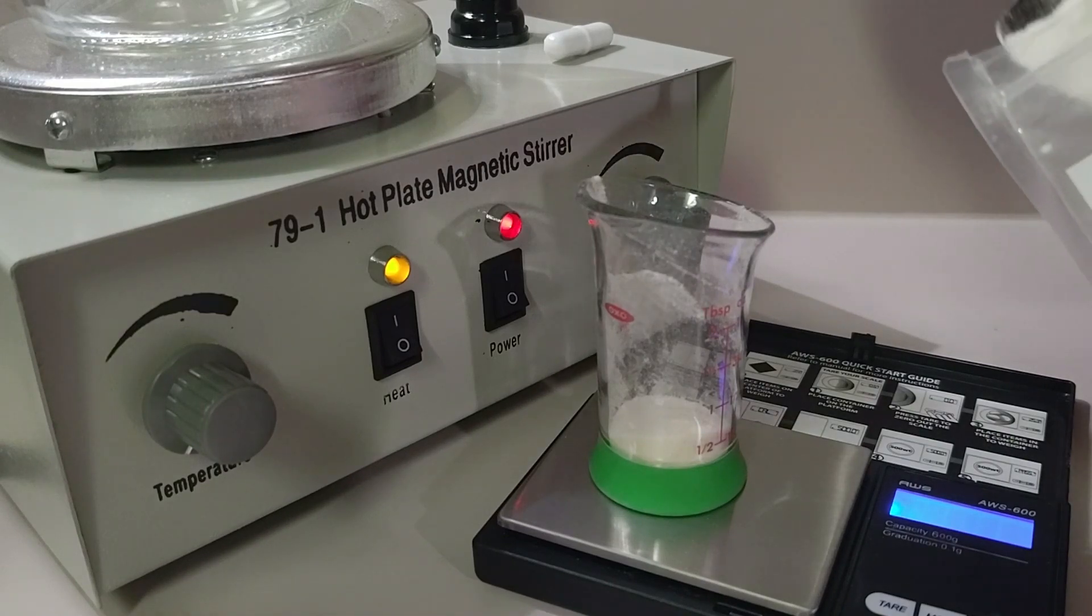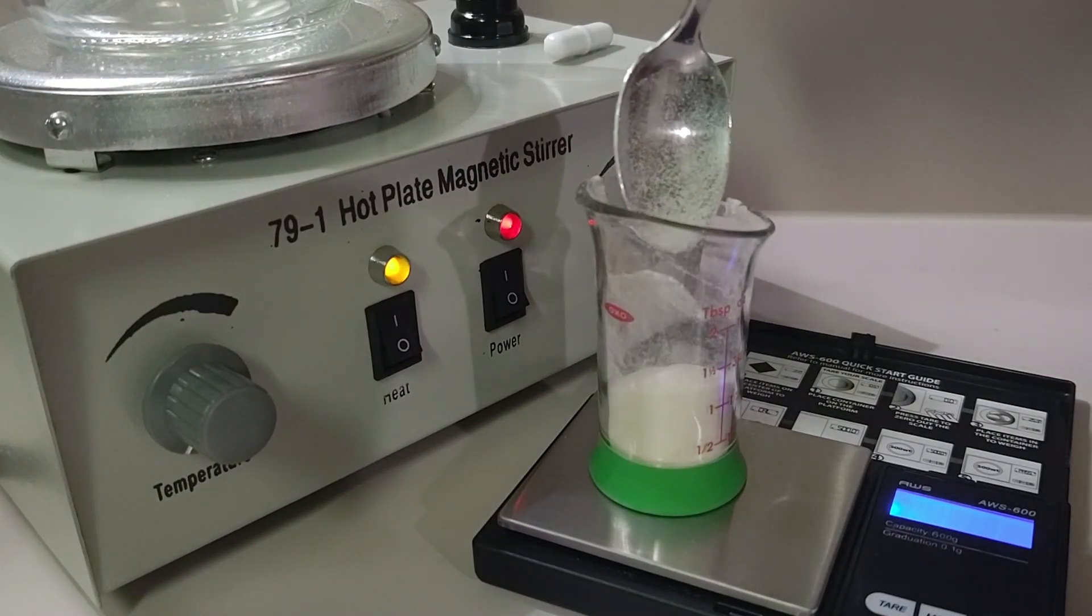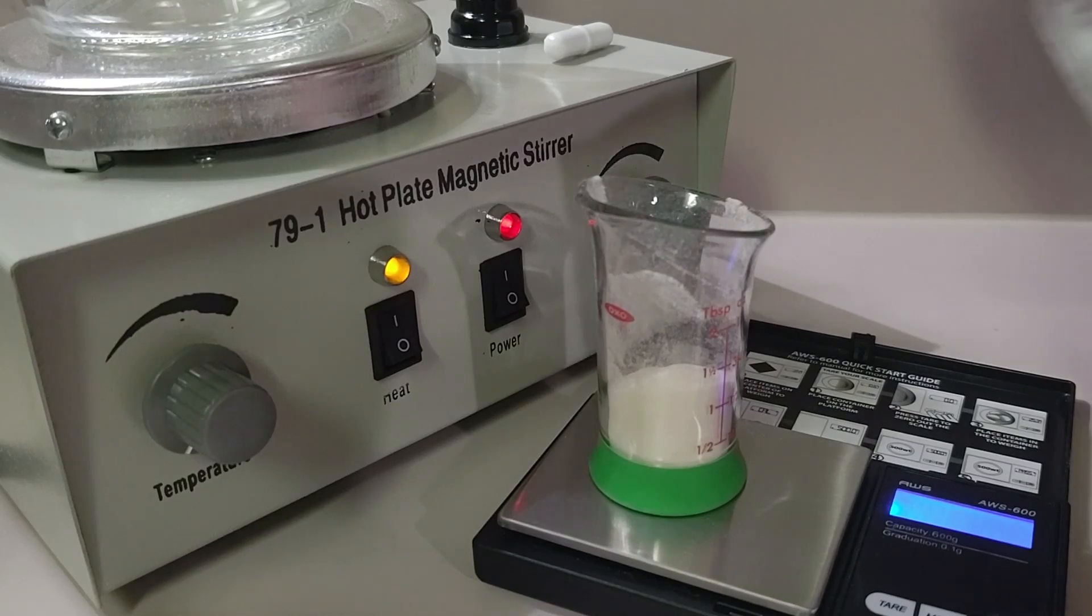In our last video we shared an easy way to get started using MEA which is a blend of malt extract powder, agar, and purified water that contains dextrose. Dextrose is a plant-based simple sugar.